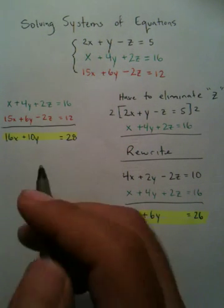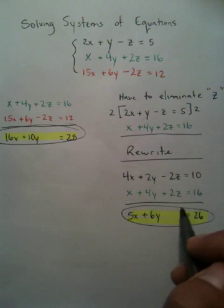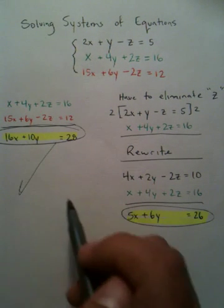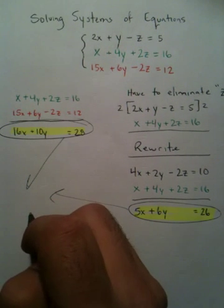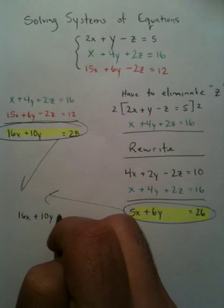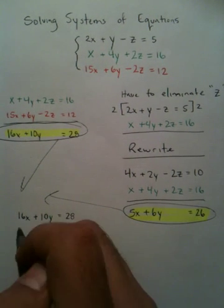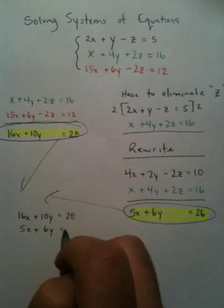Your next job is to take these two functions and you need to put them together. So if I put them together I'll get 16x plus 10y equals 28. I'll get 5x plus 6y equals 26.